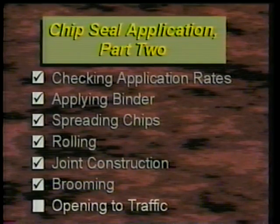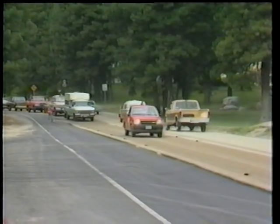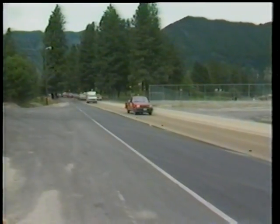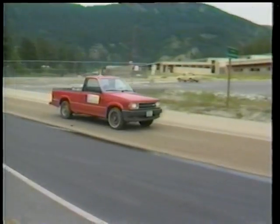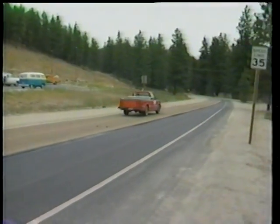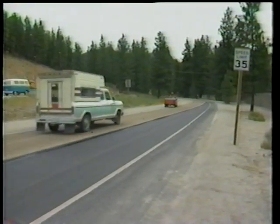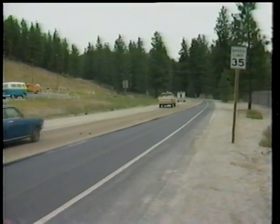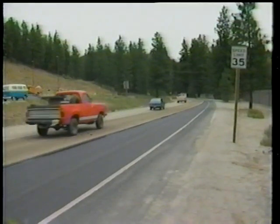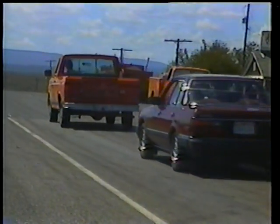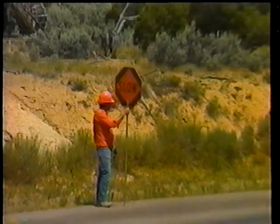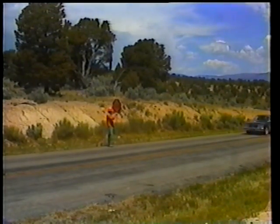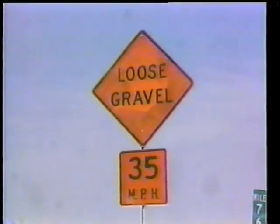The final step is opening the chip seal to traffic. Opening fresh chip seals to traffic is desirable — the traffic will help to roll the surface further. Traffic should travel slowly, no more than 40 kilometers per hour, and there should be no sudden accelerations or slowdowns, as they would likely dislodge the aggregate. Pilot cars and flaggers are recommended to direct and control traffic flow. In the absence of a pilot car, reduced speed limit signs should be posted.